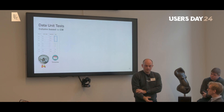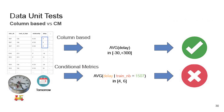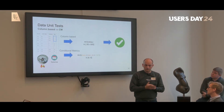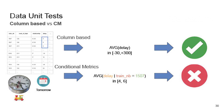To compare column-based and conditional metrics: if we run the average on the entire delay column, it might be expected between minus 30 and 300 seconds, and the batch would be accepted even if a train has a broken clock. But if we run the conditional metric, the average delay for our specific train might be expected between 4 and 6 seconds. If that train has a broken clock, the value would be 0 — falling outside the expected bounds — so the batch is correctly rejected.